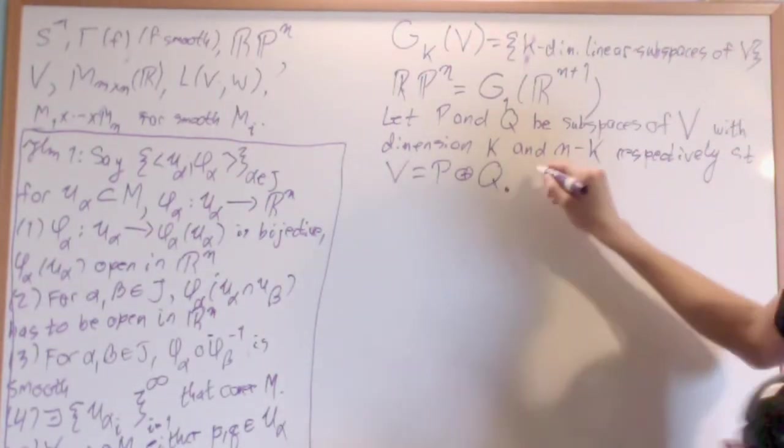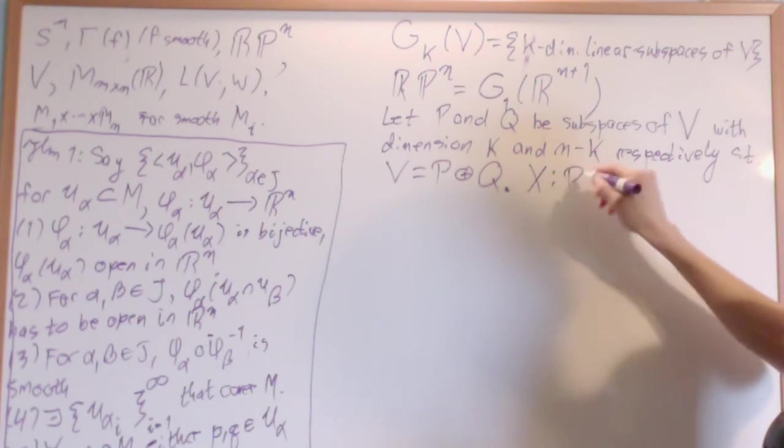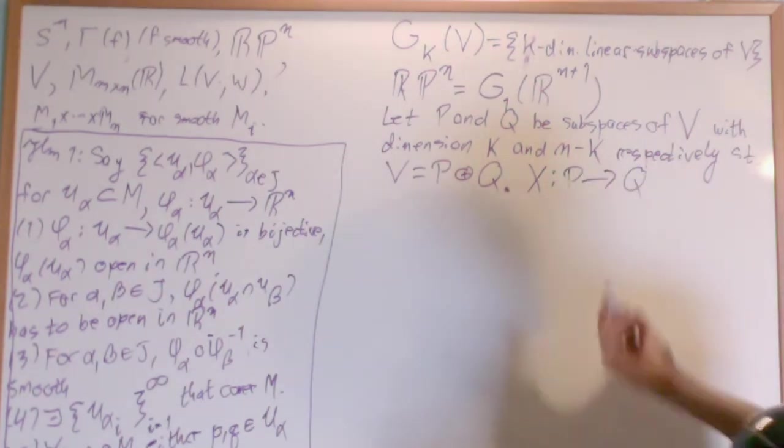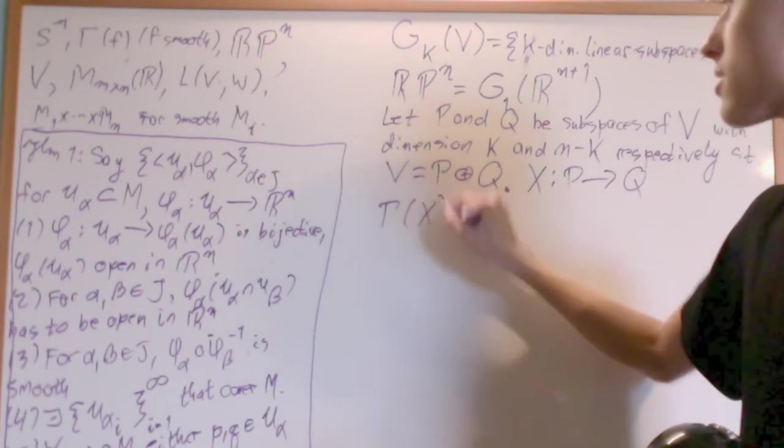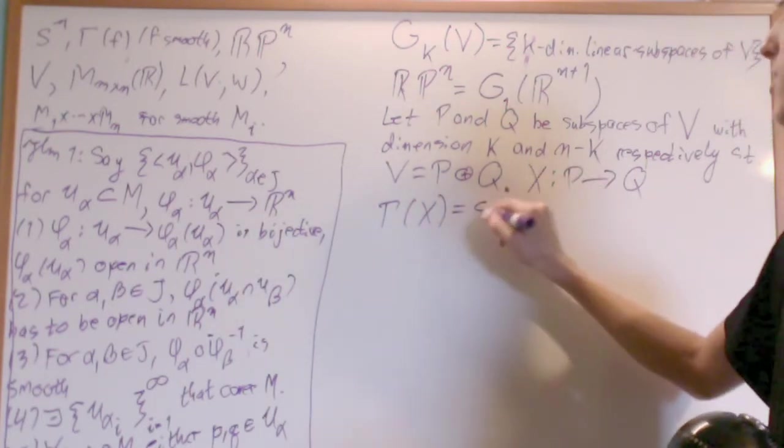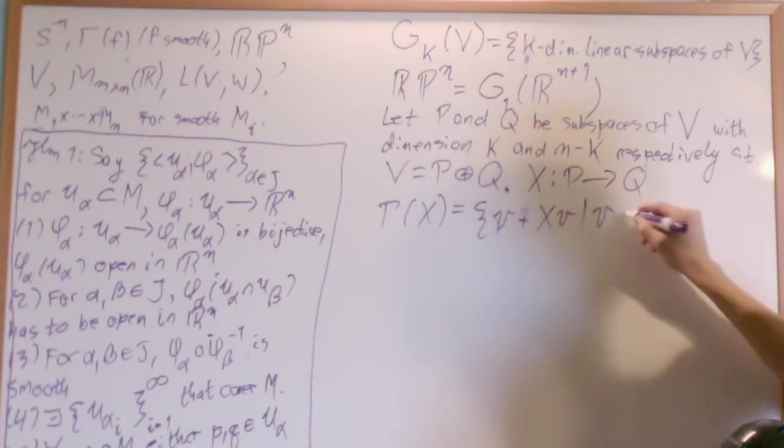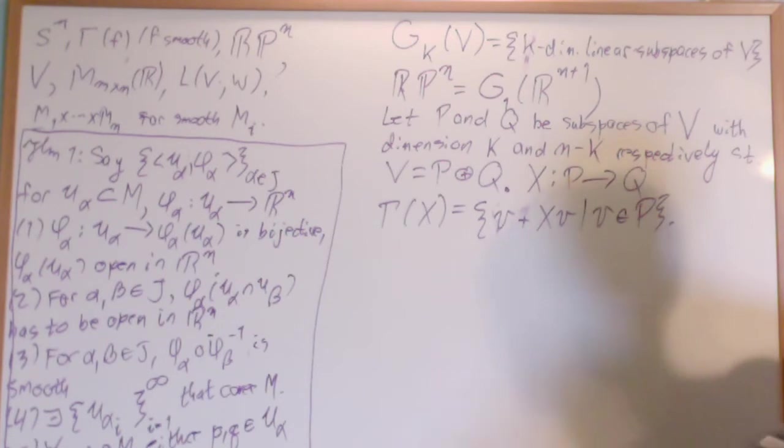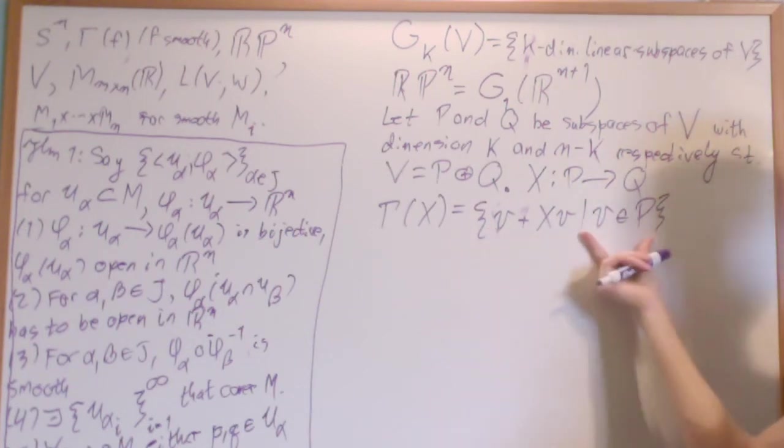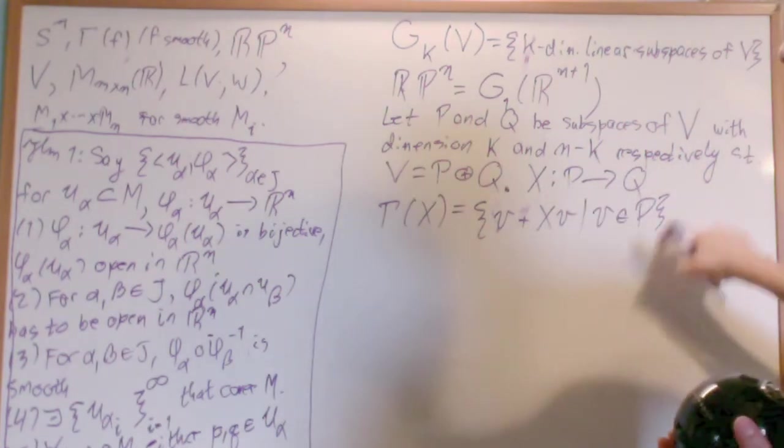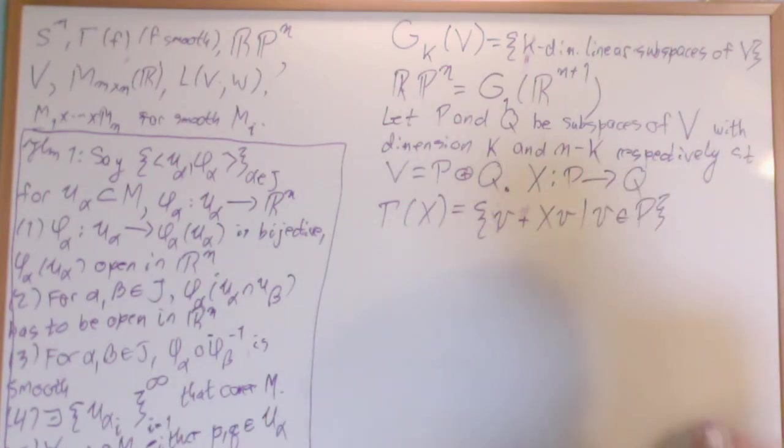Then what we'll do is we'll say that x a map from P to Q will give it what's called its graph gamma of x and it's going to be equal to the set of v, v plus x apply to v for v an element of P. Now guess what? This intersection with Q is going to be trivial because right there we have a v which is an element of P translating it out of Q because they're complementary. So its intersection with Q is going to be trivial. It's just going to be 0.